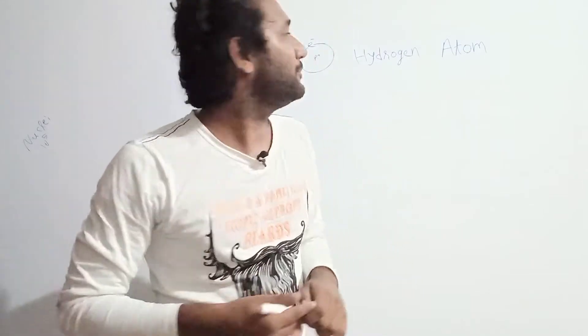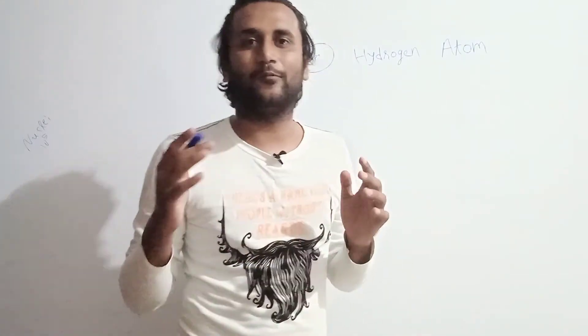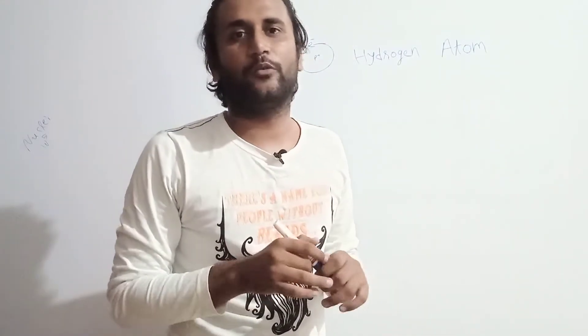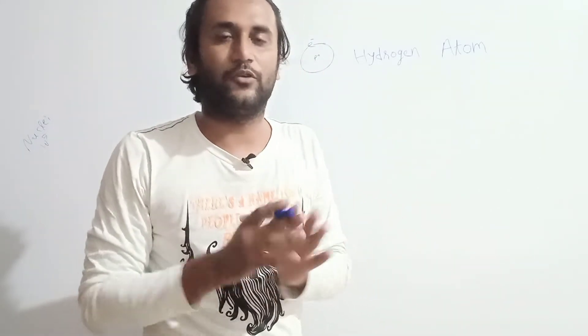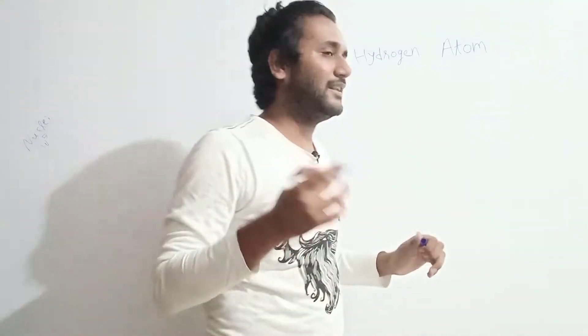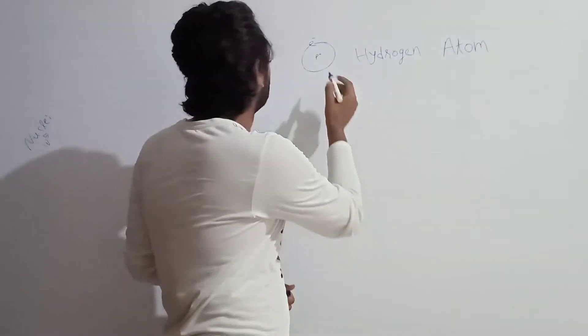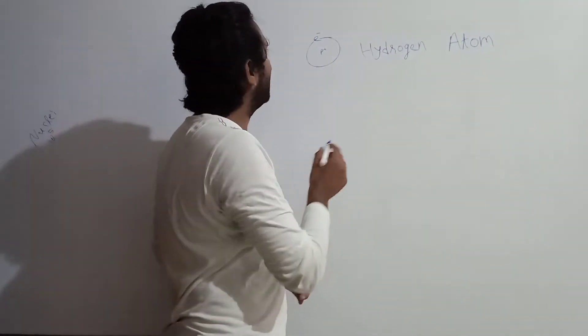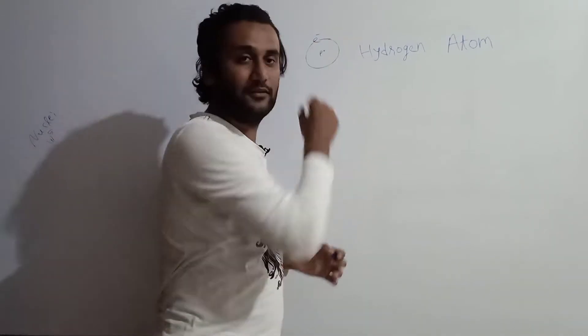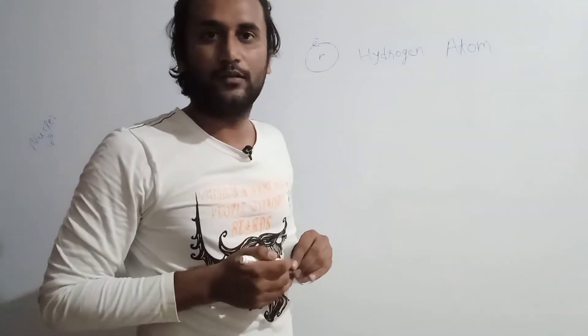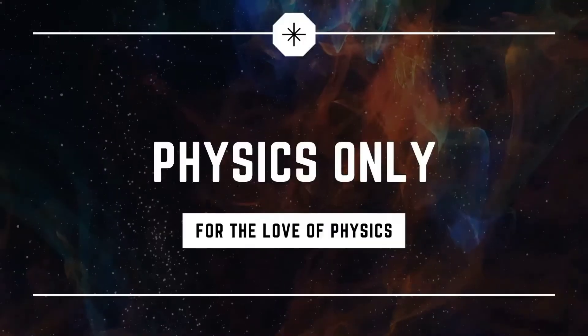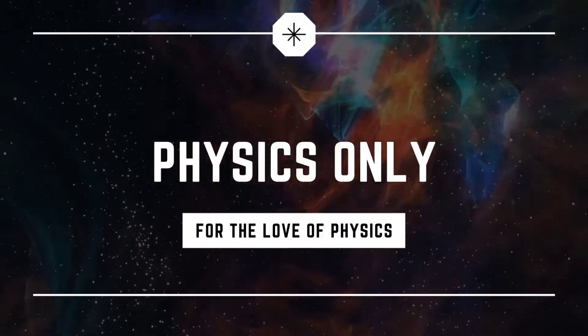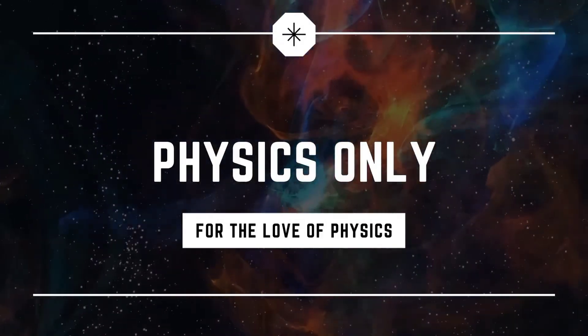Before that, let me clarify one thing. In this video, I am going to calculate the emptiness of hydrogen atom, not other atoms. In hydrogen atom, there is one proton in the nucleus and one electron in the orbital. So let's start the calculation guys. Welcome back to Physics Only.